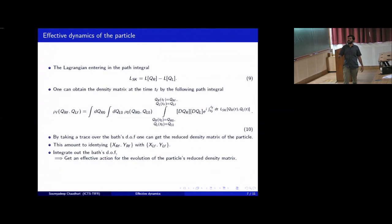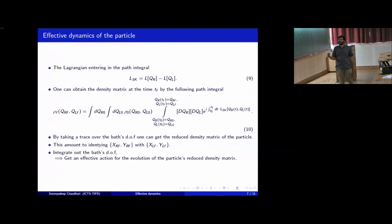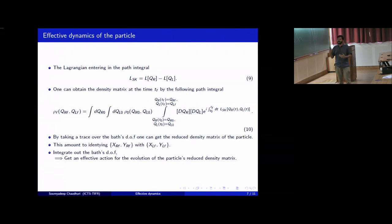One has to take two copies. The Lagrangian that appears in such path integrals, giving the evolution of the density matrix of the full system, is given by L(Q_R) minus L(Q_L), where L is the original microscopic Lagrangian. One can obtain the density matrix at some later time T_f by a path integral of this form, and by taking a trace over the degrees of freedom of the bath, one can get the reduced density matrix of the particle at this later time.